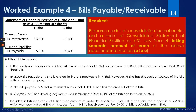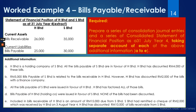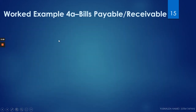We are going to take into account the separate information from A to E. But before that, there is a correction — it should read S Berhad at 31st of July, year four. So that was just a typo. Now let's go to the next slide where I'm going to talk about work example 4A.